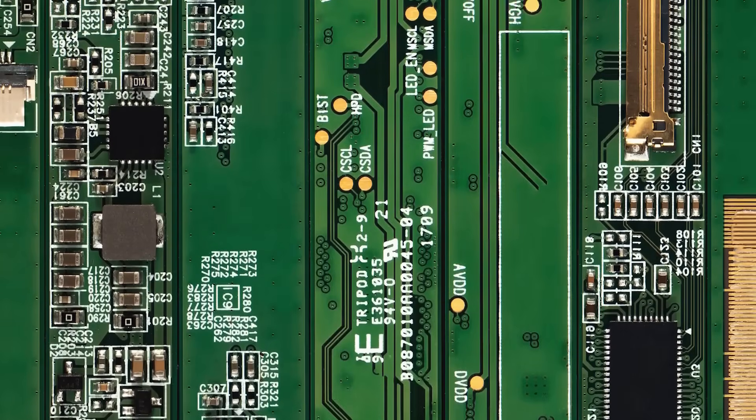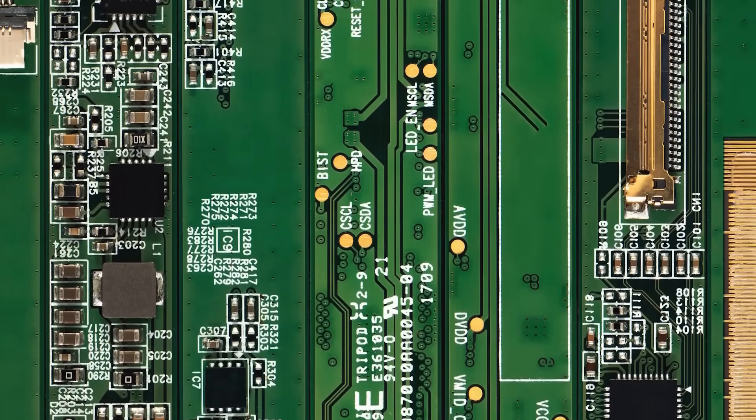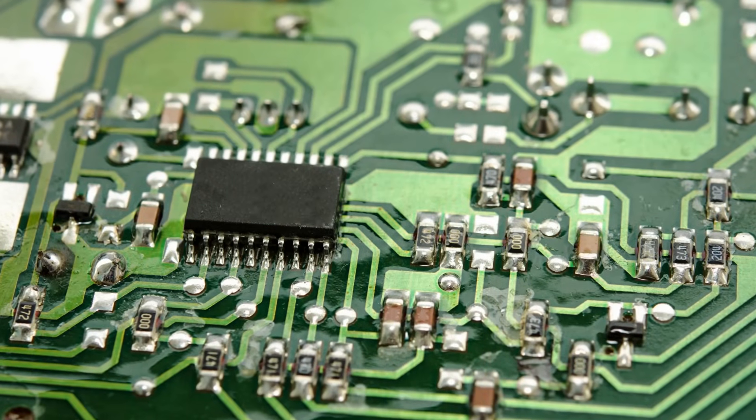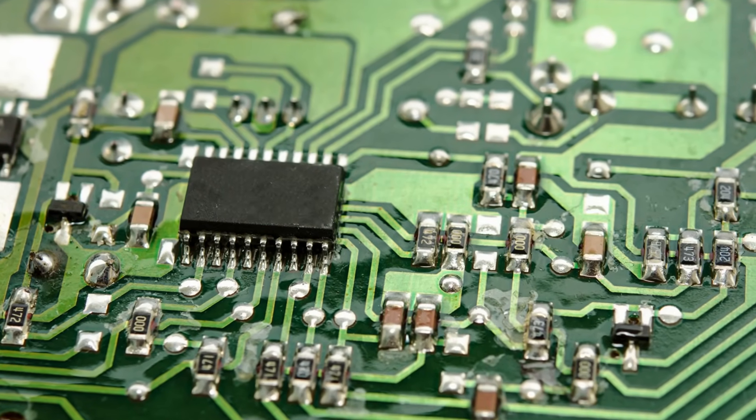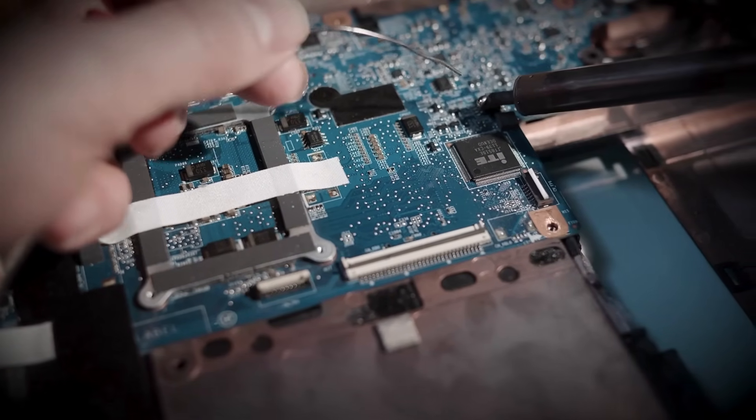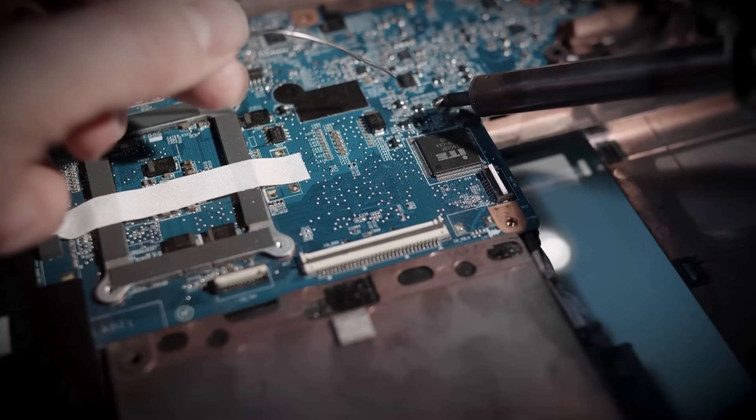Have you ever taken apart a gadget and noticed that thin green board covered in copper lines, silver dots, and tiny components? That's a printed circuit board, or PCB, and it's the unsung hero inside almost every electronic device you use, from smartphones to cars, medical devices to satellites.